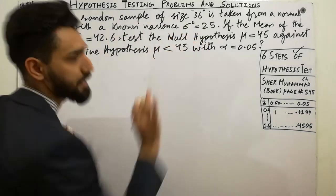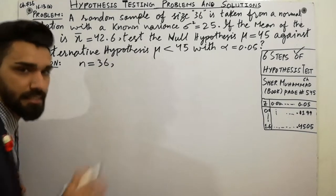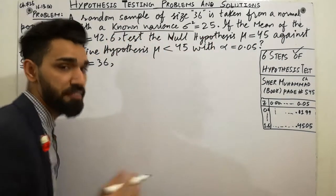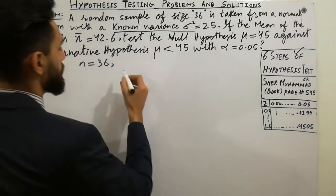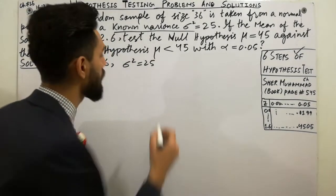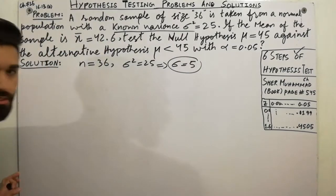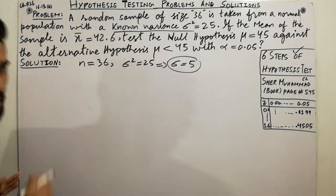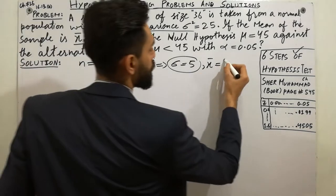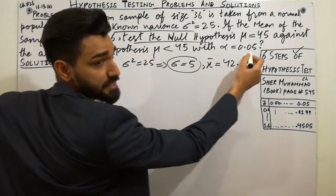A random sample of size n = 36 is taken from a normal population with a known variance, sigma squared = 25. So sigma = 5 (taking the square root of both sides). The mean of the sample is x-bar = 42.6. You have to test the null hypothesis that mu equals 45 against the alternative that mu is less than 45.